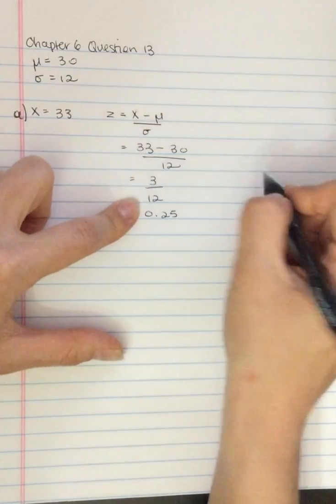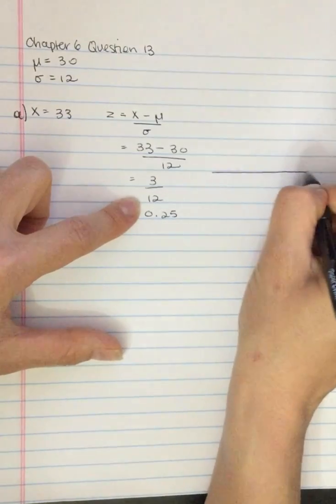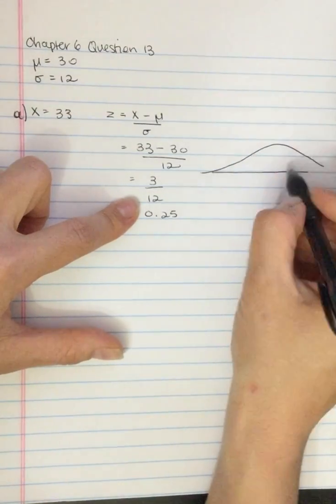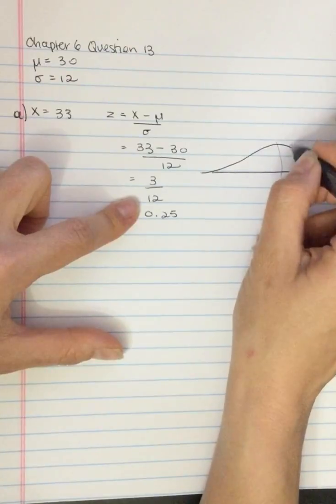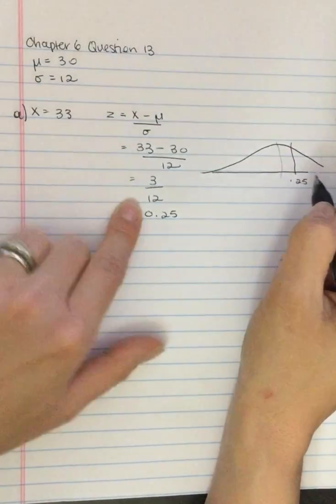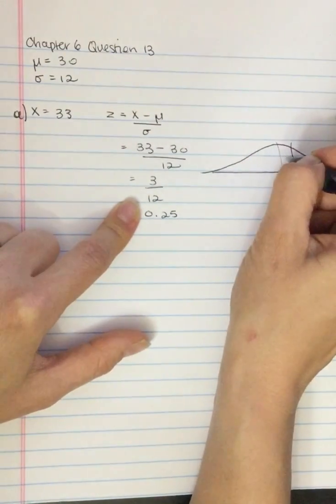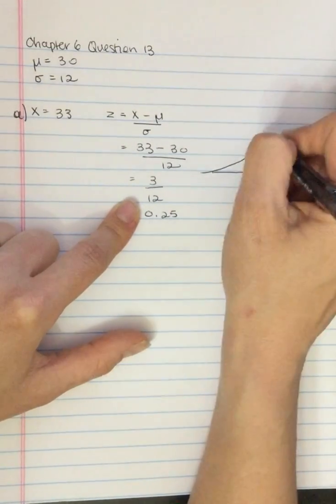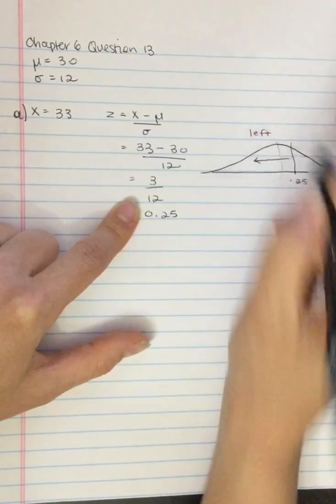So we've got a z-score of positive 0.25. So our score is going to be to the right of the mean, and so the body is to the left of this score.